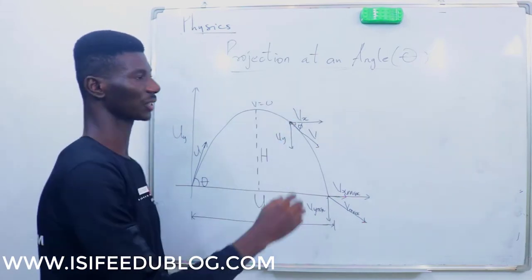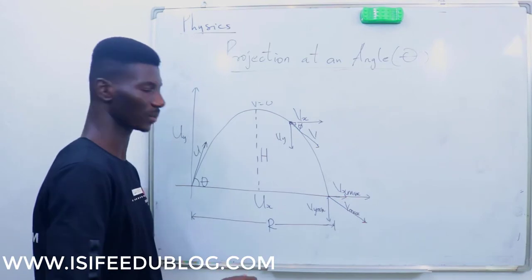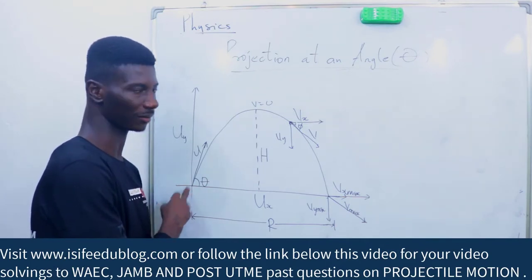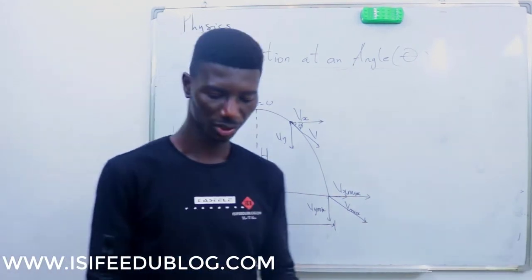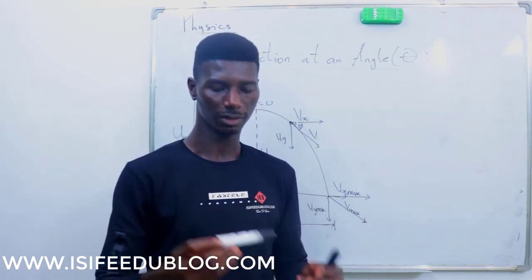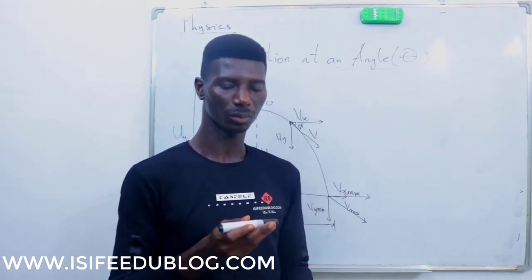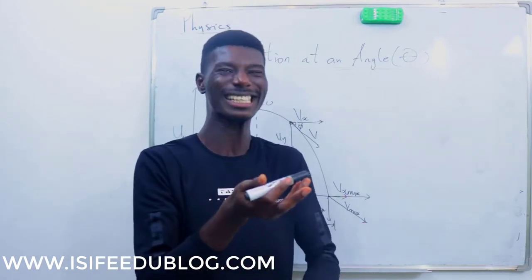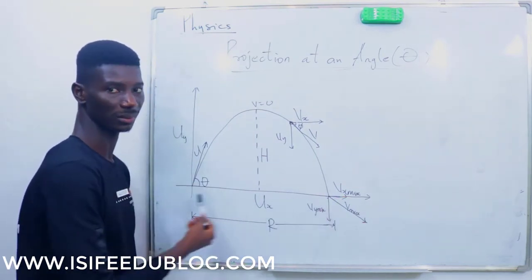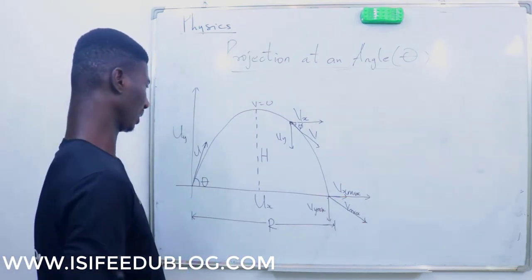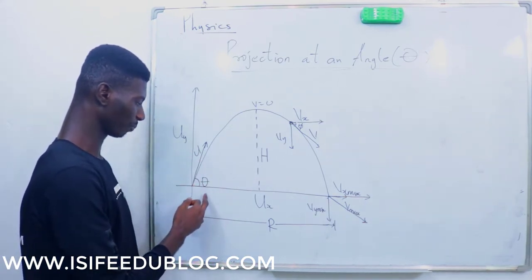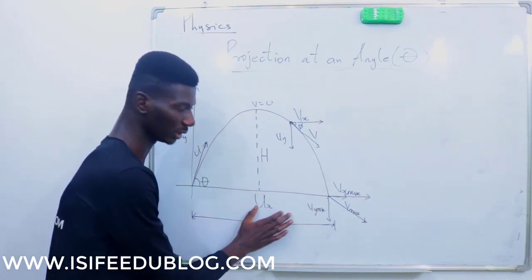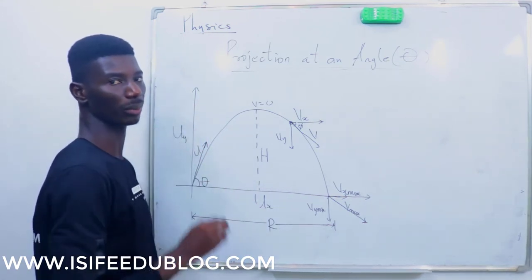When we talk about projection at an angle, the little difference between this and horizontal projection is that from the onset of projection, you are making an angle. In horizontal projection, you are throwing like this — no particular angle being made. In vertical projection, you are throwing upward — no angle being made. But when throwing at an angle, the initial velocity makes an angle theta with the horizontal. Because the initial velocity makes an angle theta, it can be resolved into two components: the horizontal component and the vertical component of the initial velocity.